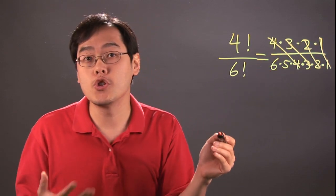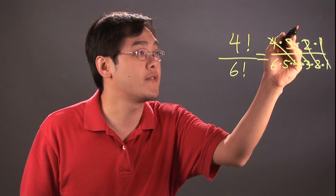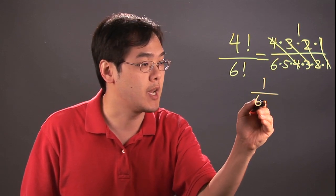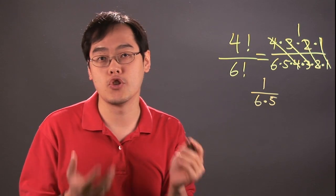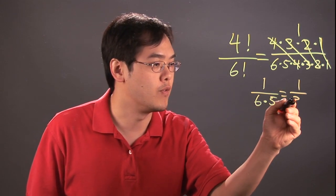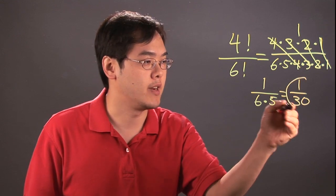In this case, since the numerator is entirely canceled, you're left with a 1 at the top, and at the bottom you have 6 times 5, so you have 1 over 6 times 5. And only then should you multiply the two numbers. 6 times 5 being 30, so you have 1 over 30 as your final answer.